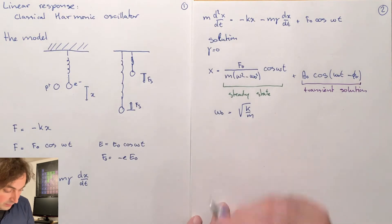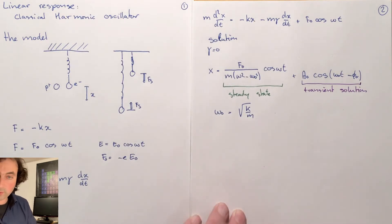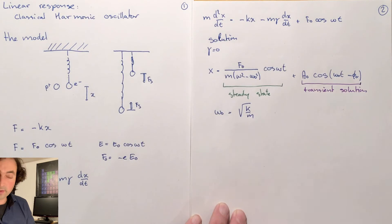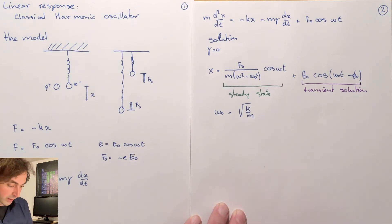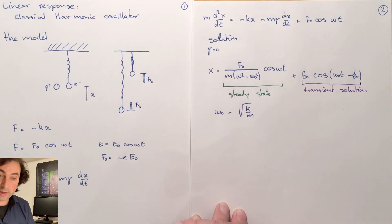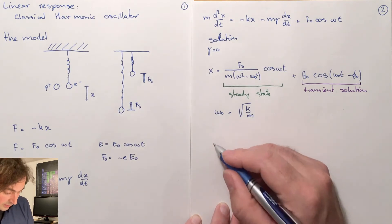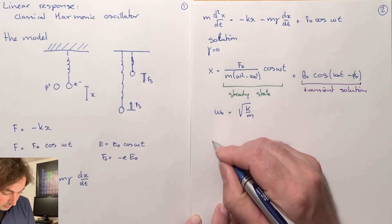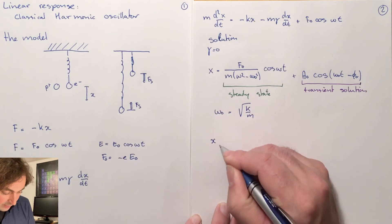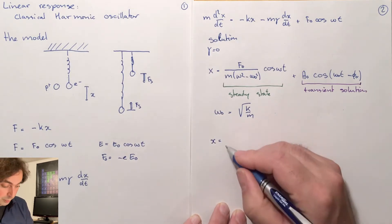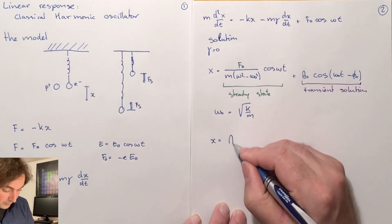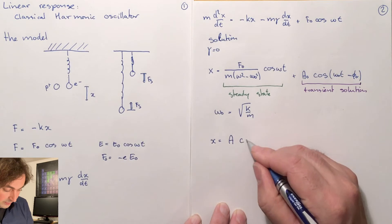Here omega zero is the eigenfrequency of the harmonic oscillator, given by k over m. The steady state solution is related to our driving force and our driving frequency. The transient solution oscillates with the eigenfrequency and an amplitude that we can freely choose. If we want to look at the response functions we have to look at that oscillation that is induced by the field, and not the oscillation that was present before and after we started our experiment.